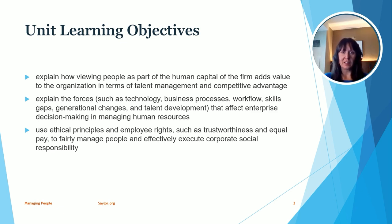The second learning objective is to explain the forces such as technology, business processes, workflow, skills gaps, generational changes, and talent development that affect enterprise decision-making in managing human resources. Our third learning objective is to use ethical principles and employee rights — such as trustworthiness and equal pay — to fairly manage people and effectively execute corporate social responsibility.